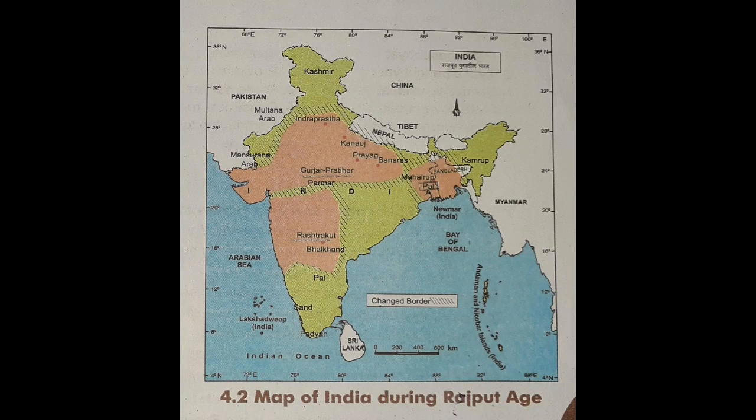Students, as you have learned this chapter, you can see the Rastrakuta dynasty which is shaded in orange. That portion was ruled by the Rastrakuta dynasty. From Gujarat to Uttar Pradesh where Banaras is written, and Indraprastha — all that area was ruled by Gujar Pratihara, as mentioned here.